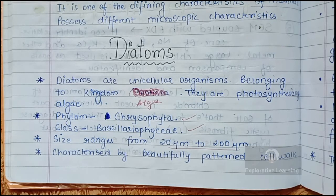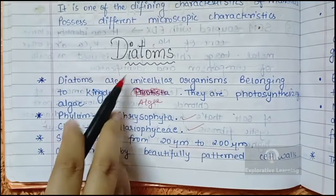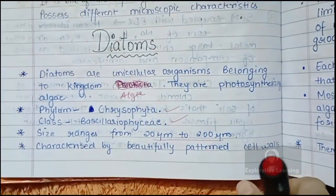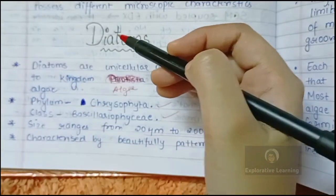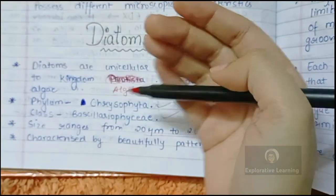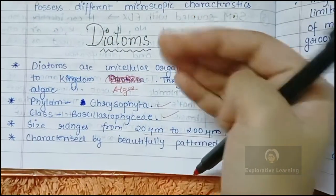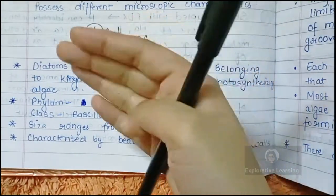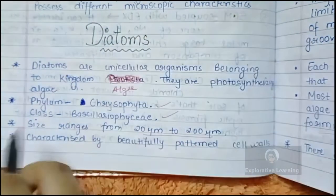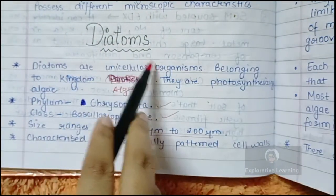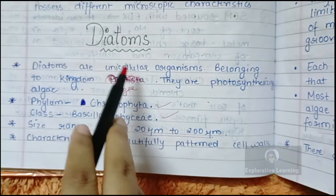We will discuss about diatoms as forensic evidence. Diatoms are commonly observed in cases of drowning in the lungs of the patient or in different other body parts. It could be in the airway, the passage of the airway, or in the bone marrow as well. There are different locations where you can obtain diatoms as evidence.